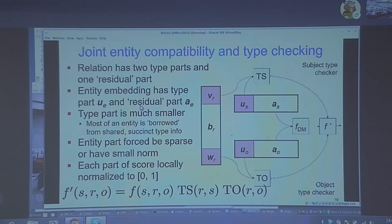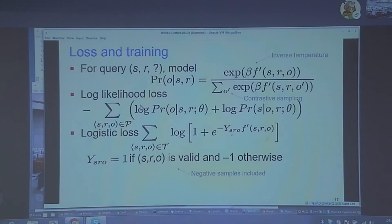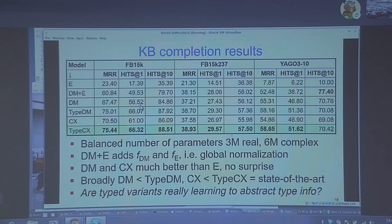We train the parameters using various loss functions and training protocols. The most important result is that each of the typed variants uniformly improves by a fairly large margin the performance of the base model: TypeDM is better than DM, TypeCX is better than CX. DM and CX themselves are much better than the E-model, which is no surprise. But the nice thing is that by combining and co-training parts of the E-model with parts of the DM and CX model, we can improve all of them. At that point, TypeCX was the state of the art — since then, totally different techniques in the direction of tensor factorization have beaten these numbers.